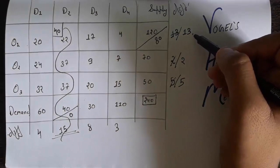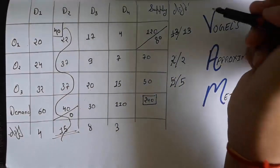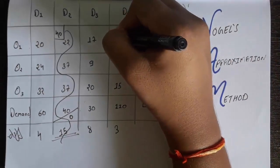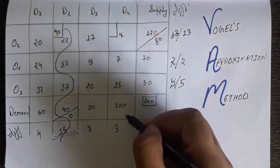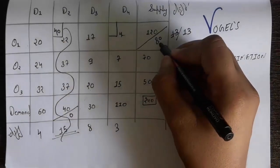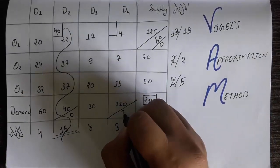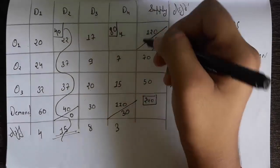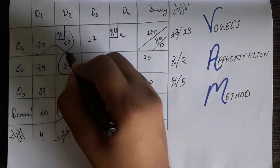The largest difference is 13, which belongs to row O1. We look at the entire O1 row and find the smallest number, which is 4. We make a box there. The value 4 intersects at a supply of 80 and a demand of 110. The minimum is 80, so supply becomes 0 and demand becomes 110 minus 80 equals 30. We write 80 in the allocation cell, then remove row O1 since its supply is now 0.